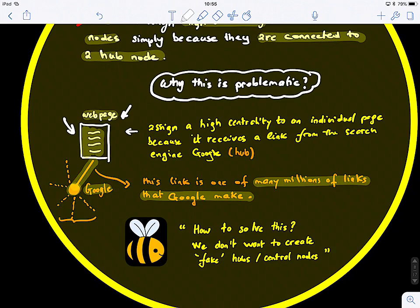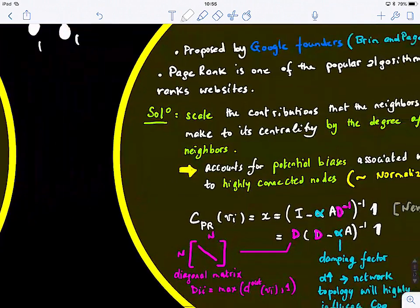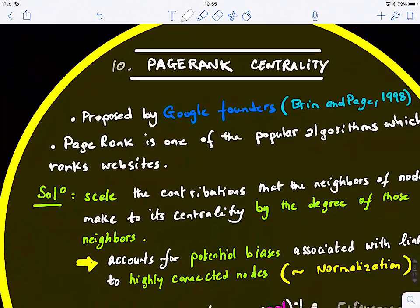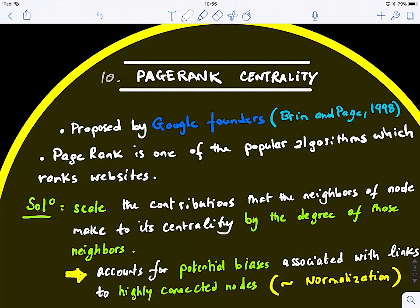Any ideas on how to solve this problem? Okay, so, I'm going to give you one of the solutions that was actually proposed by Brin and Page in 1998. And these are the Google founders. So, they actually came up with PageRank Centrality. And this is one of the most popular algorithms in ranking websites.